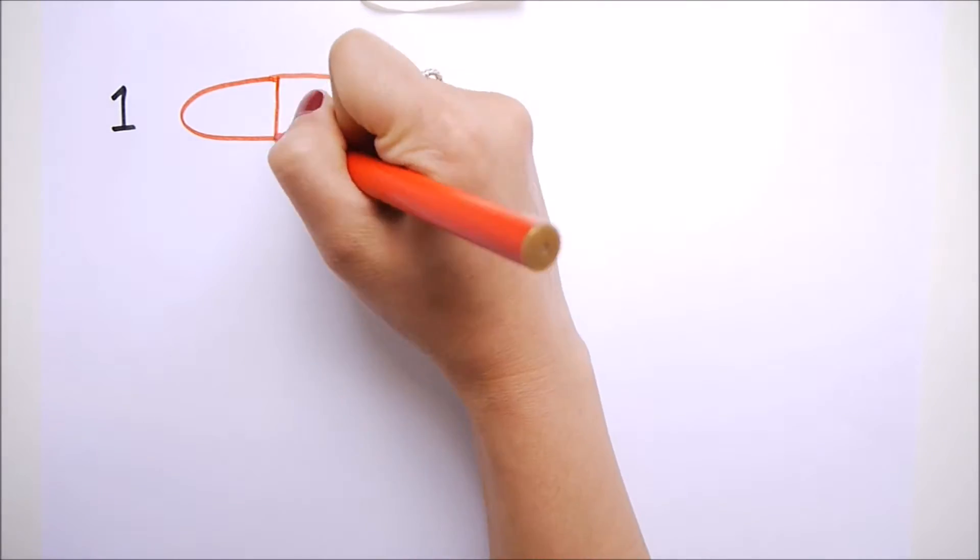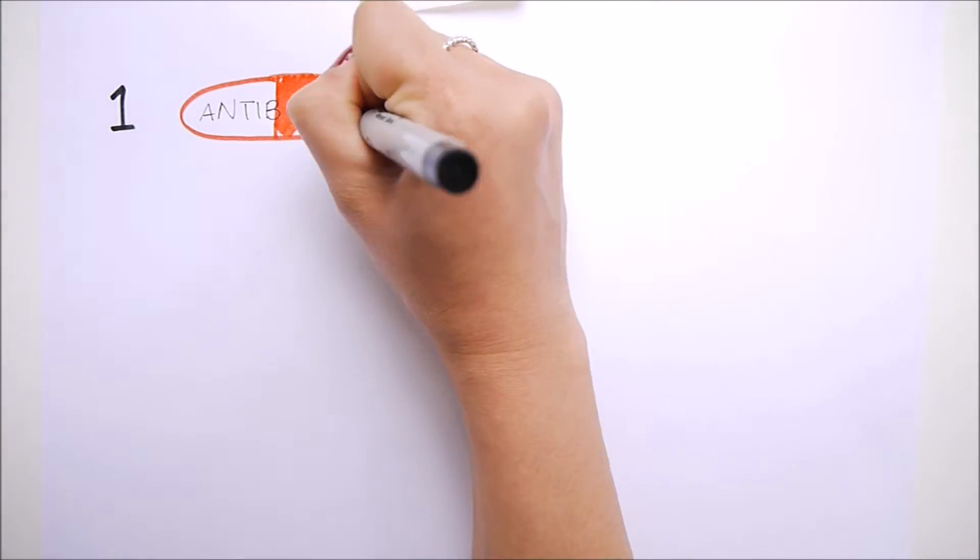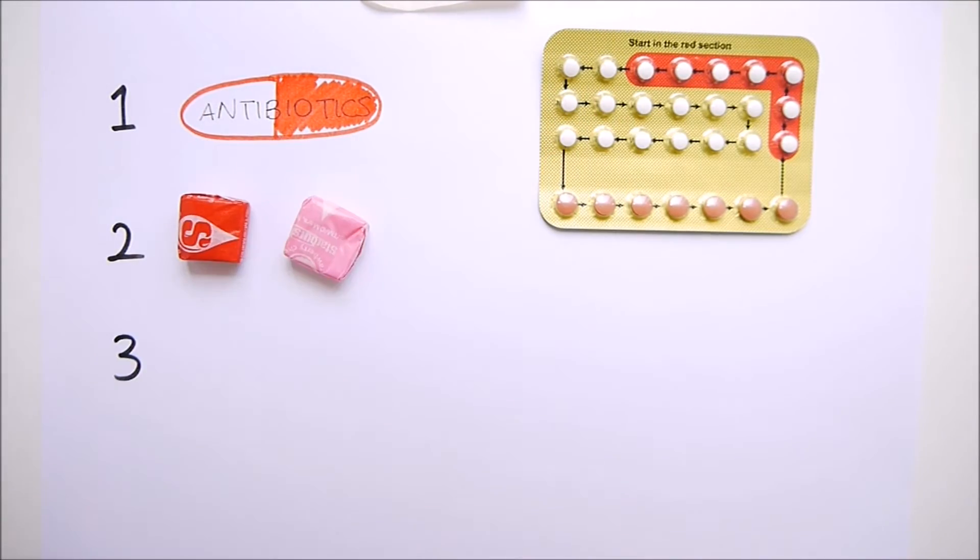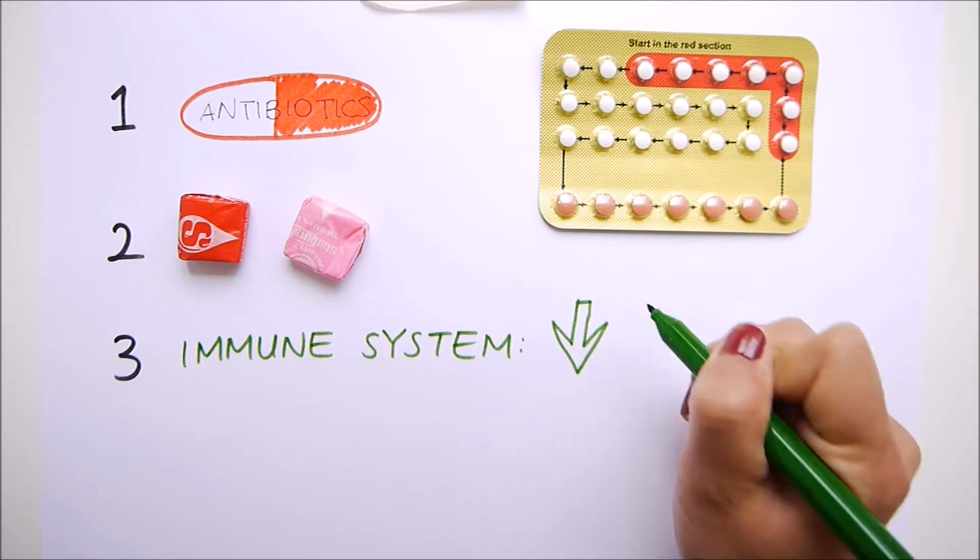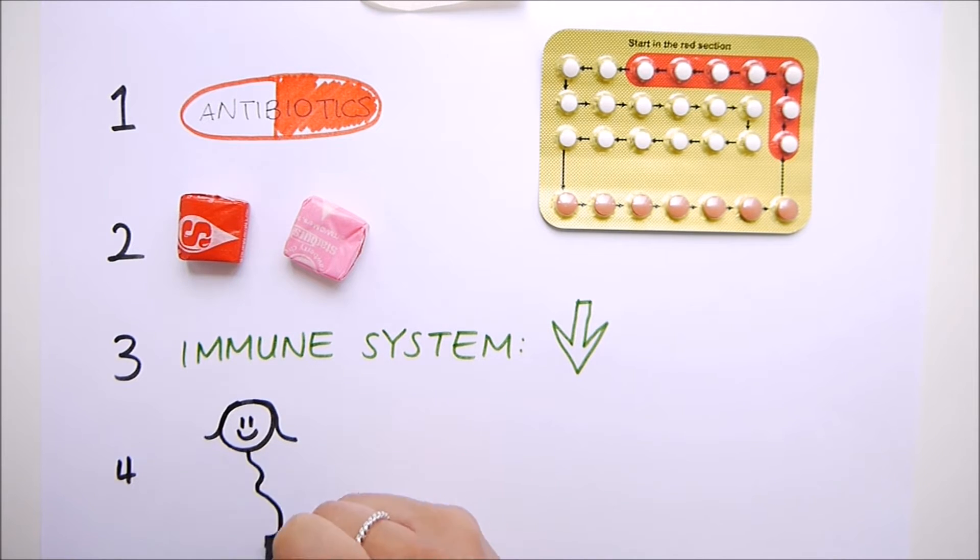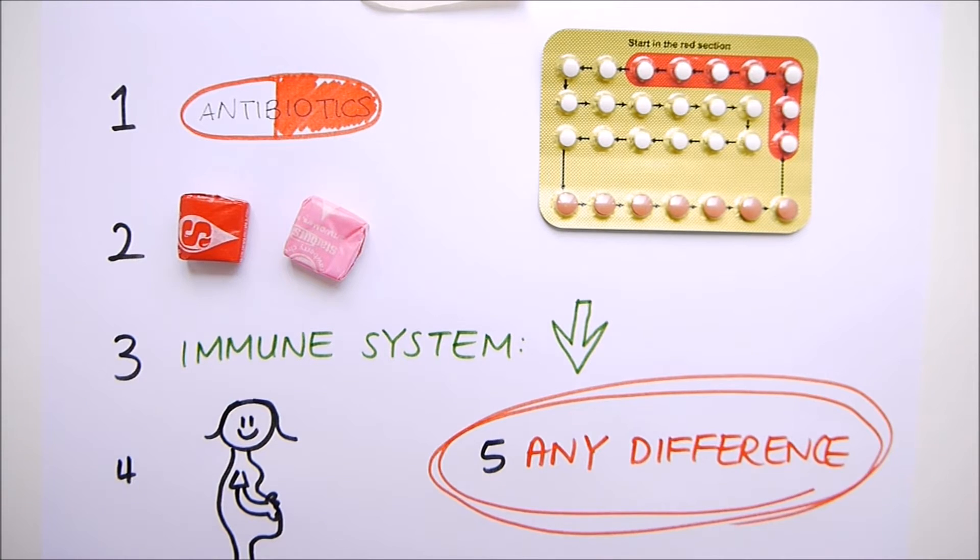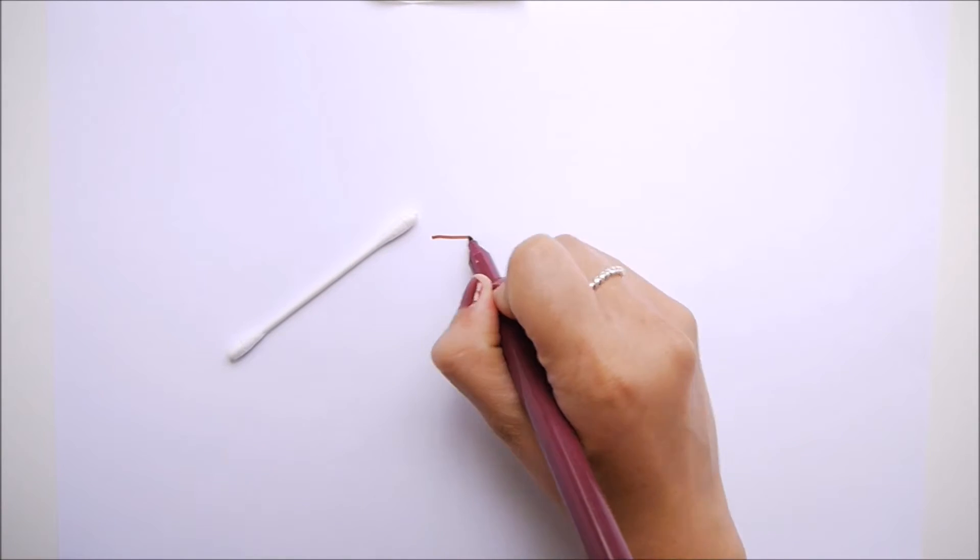The overgrowth can be caused by taking certain medications, like antibiotics or the pill, having diabetes, having a suppressed immune system like HIV, being pregnant, or basically any difference to your body compared to normal. Thrush can be properly diagnosed by going to the doctor,